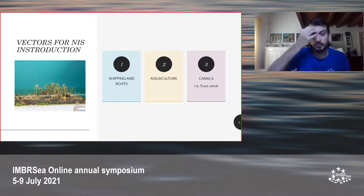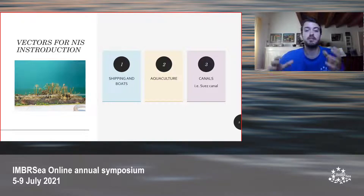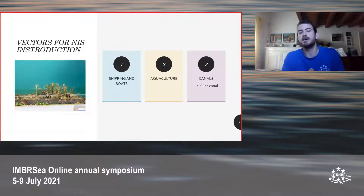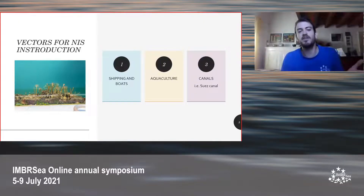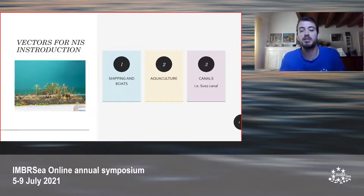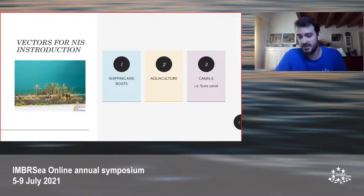And also canals. For example, here in the Mediterranean we have the Suez Canal that connects the Red Sea with the Mediterranean Sea. We call it the highway of alien species — such as fish, mollusks, and crustaceans — which have direct access to the Mediterranean basin.